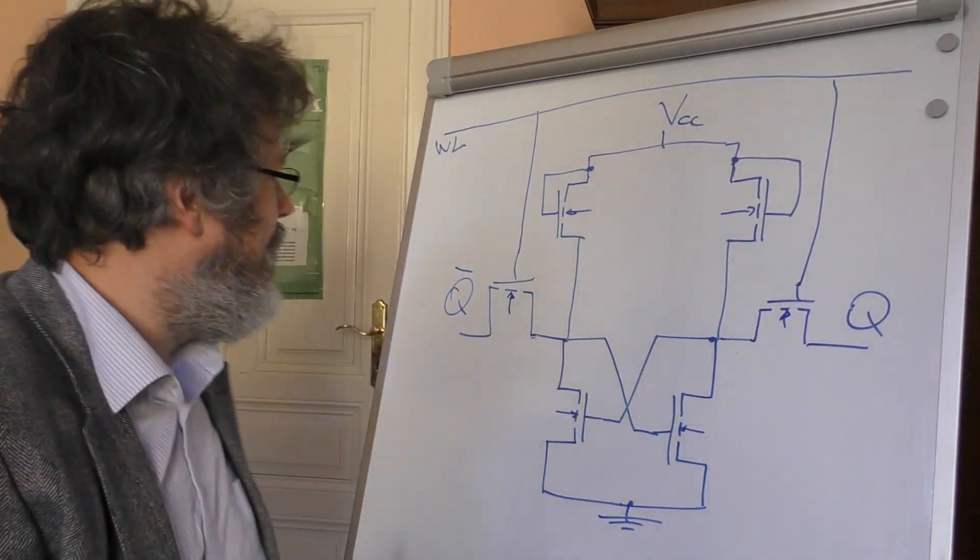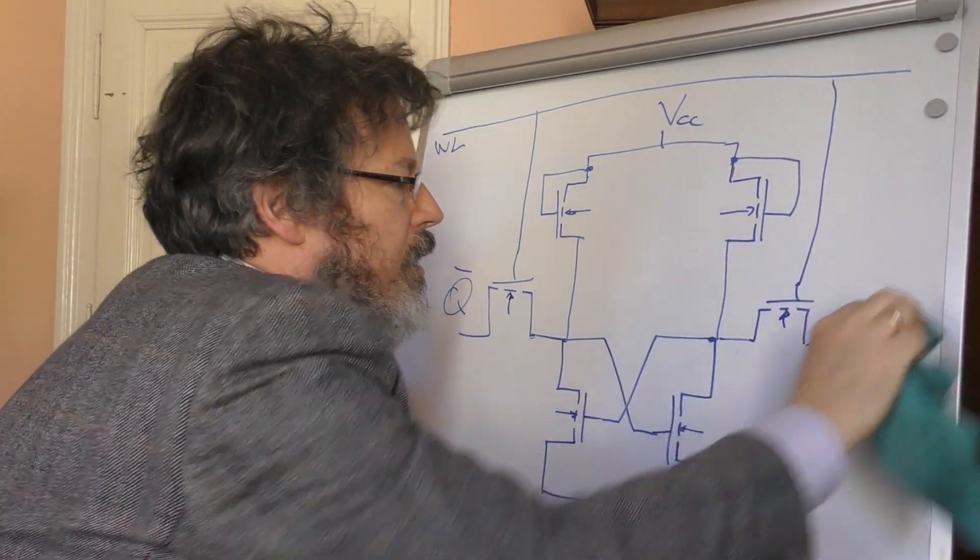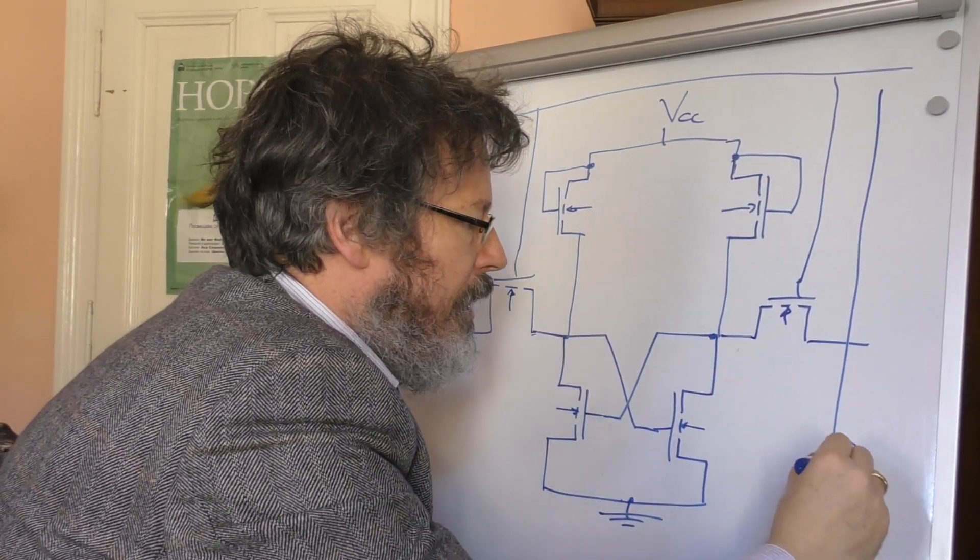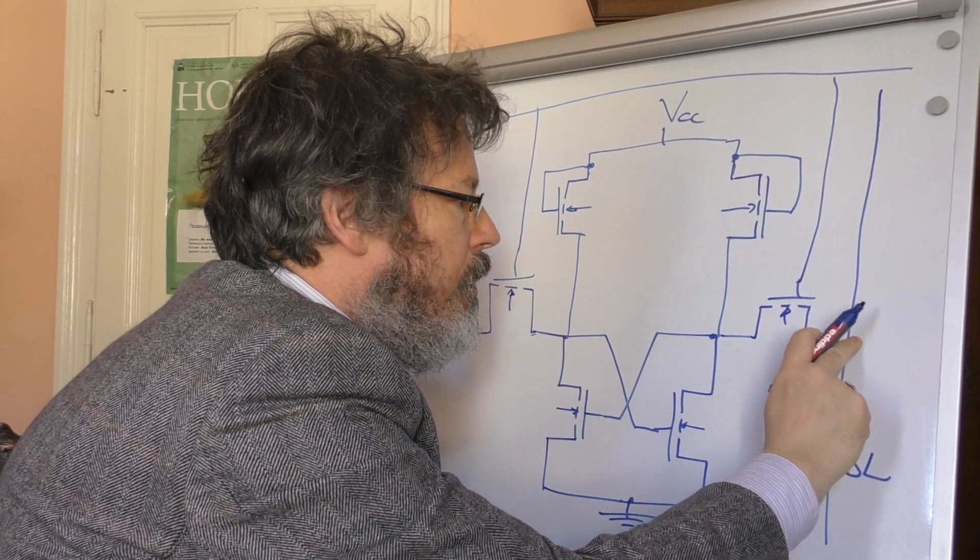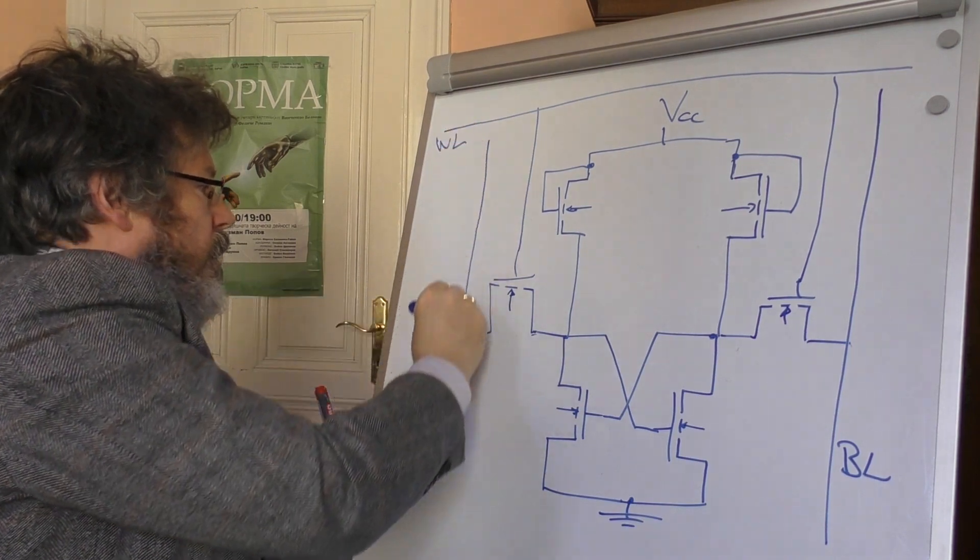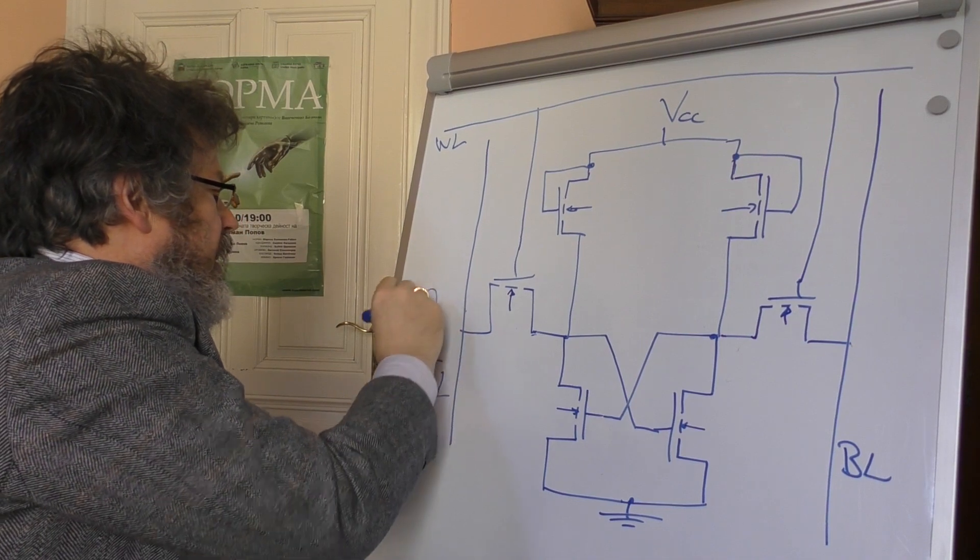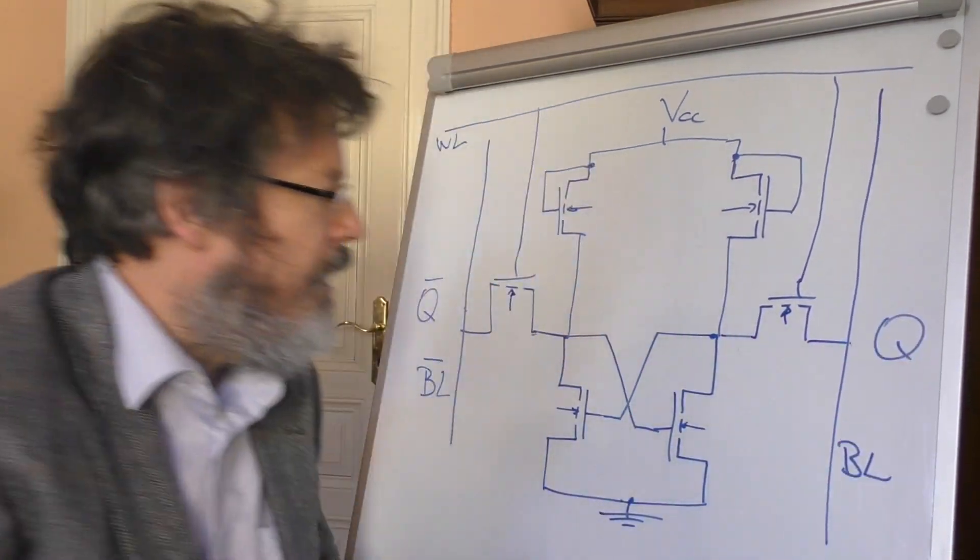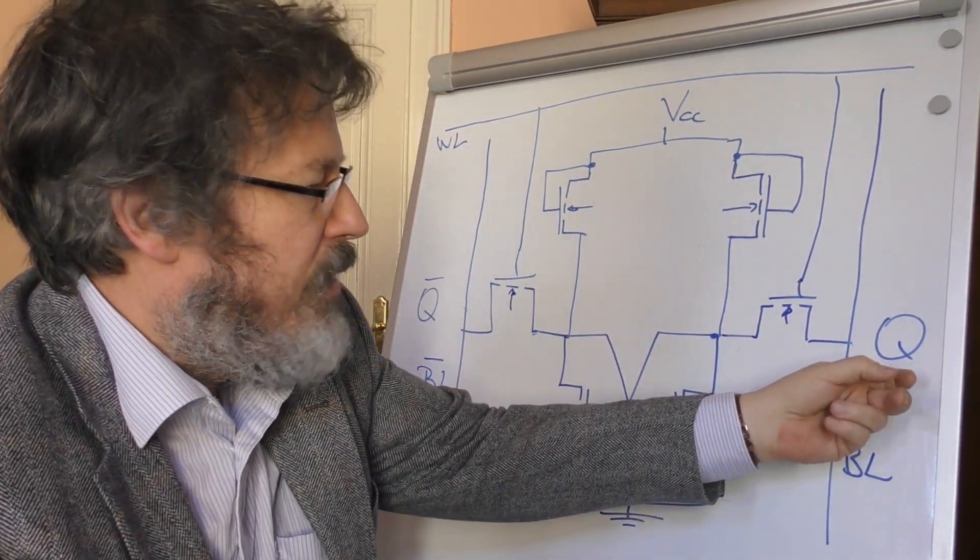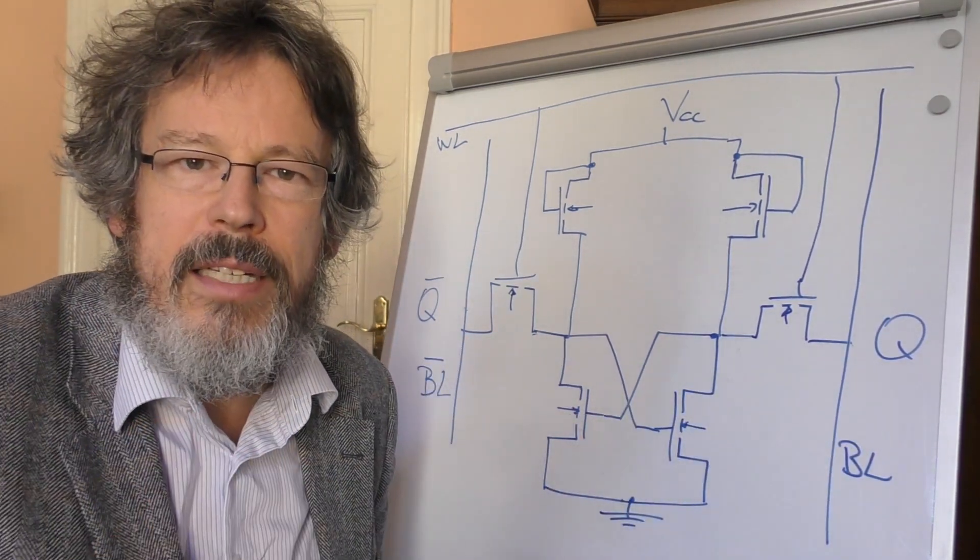And then we have two bit lines, namely at these two outputs Q and Q-bar. That's a bit line here and a bit line on this side. I'll call this one bit line bar to illustrate that this is the Q-bar output and this is the Q output. You might ask, why do you need two bit lines? Well, typically with these cells, when one state is accessible, the other is automatically accessible too, so it would be foolish not to tap that as well.